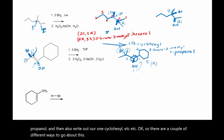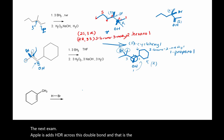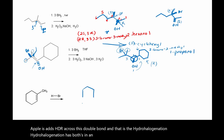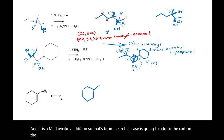The next example adds HBr across this double bond, and that is a hydrohalogenation. Hydrohalogenation has both syn and anti arrangement, and it is a Markovnikov addition. So that bromine, in this case, is going to add to the most substituted carbon.